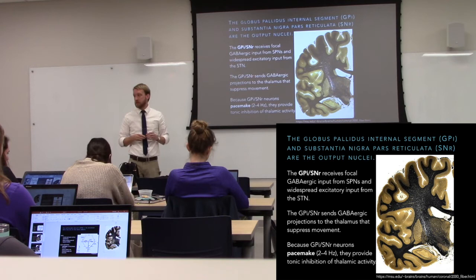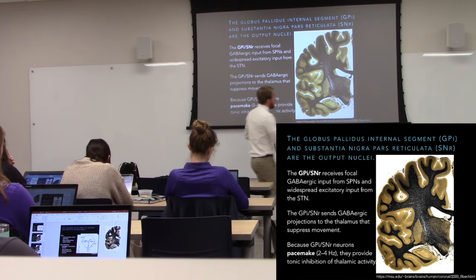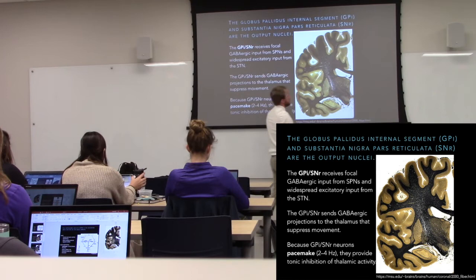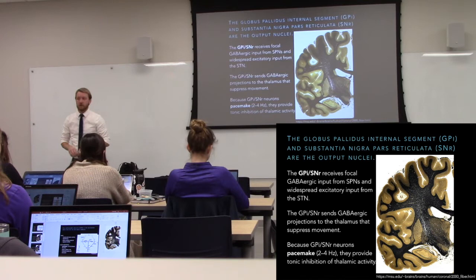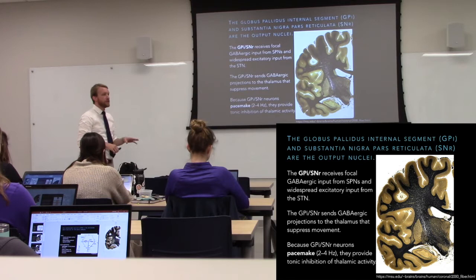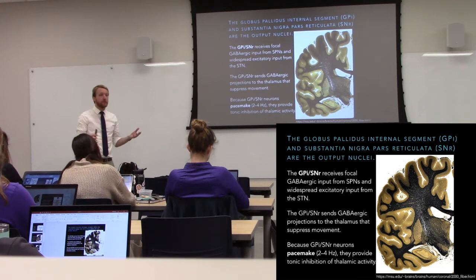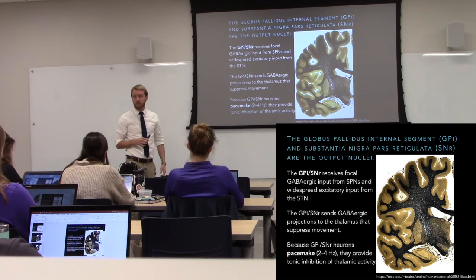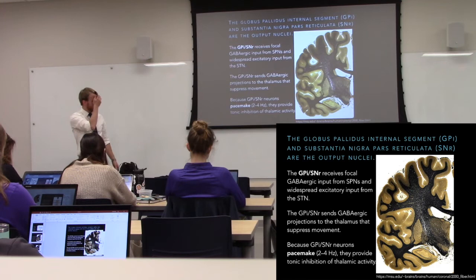Globus pallidus means 'pale globe' — it's because it's a myelinated nucleus with a lot of myelinated axons running through it that make it look pale. The substantia nigra looks dark because of the dopamine synthesis that takes place there and the neuromelanin that's produced. Your GPI is right here, and your substantia nigra reticulata sits a little anterior to the compacta but they're pretty much intermixed. Here are your output nuclei that feed into the thalamus. These also pacemake and are GABAergic, so they're going to provide tonic inhibition to the thalamus.